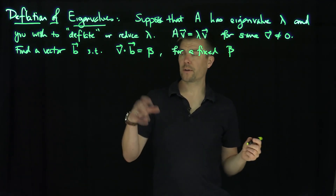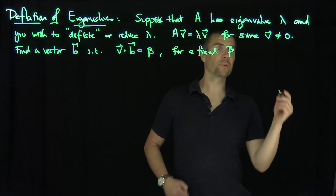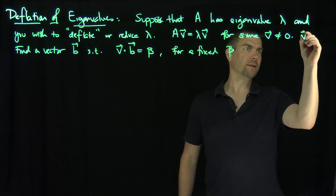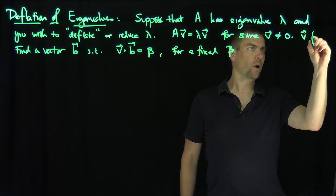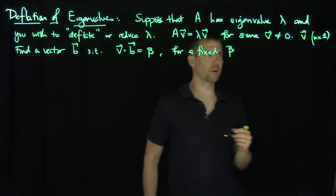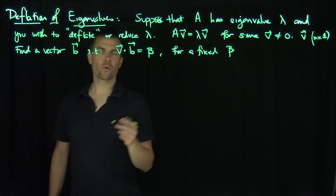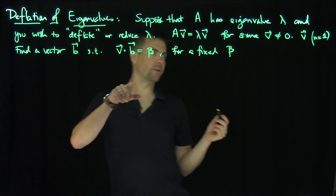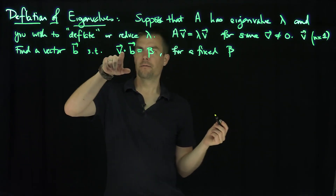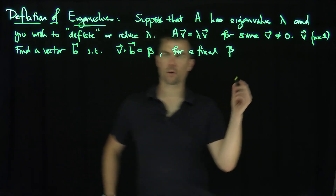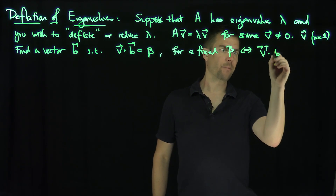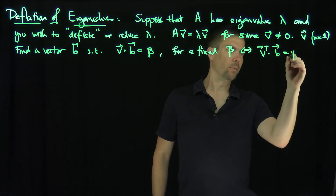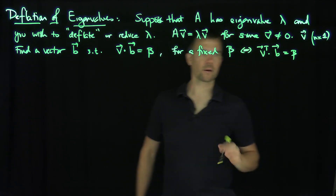We're assuming that v is an n-by-1 vector. So we can write v dot b as v-transpose times b, where v-transpose is 1-by-n and b is n-by-1, giving a scalar equal to beta.